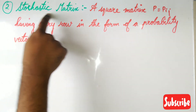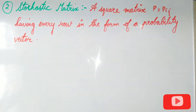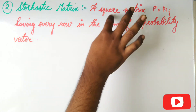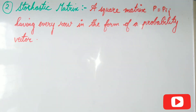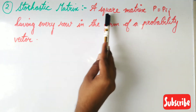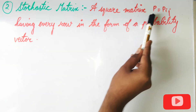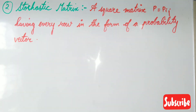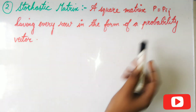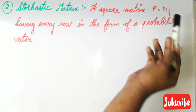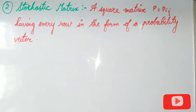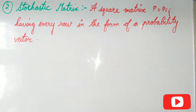Now the second part: the stochastic matrix. A stochastic matrix is basically a square matrix, denoted by P. Here pᵢⱼ means the element at row i and column j.